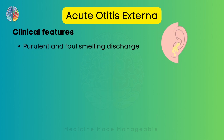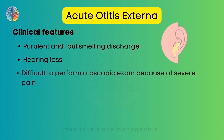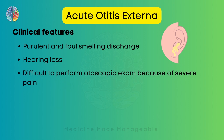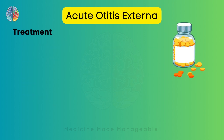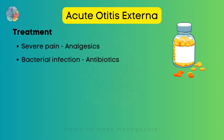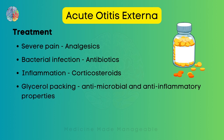The patient will also have purulent and foul-smelling discharge from the ear, hearing loss due to fluid accumulation or edema, and it will be difficult to perform an otoscopic exam due to severe pain. There will be a red, swollen EAC with purulent debris and desquamated epithelium. Treatment includes analgesics for pain, antibiotics for the bacterial infection, corticosteroids for inflammation, and glycerol packing which has antimicrobial and anti-inflammatory properties.